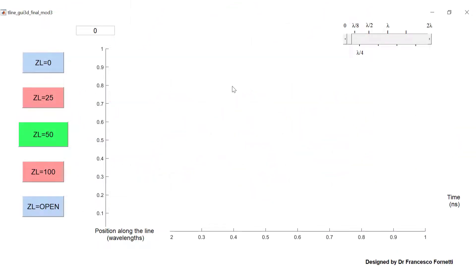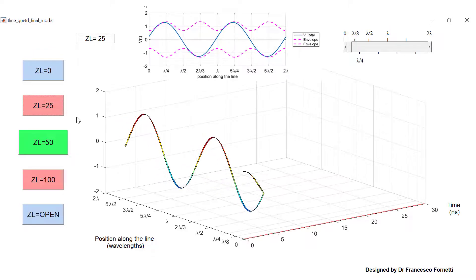This can be clarified with our 3D animation, which enables us to see the voltage that would be observed at any point along the length of the line if we probed it with a high frequency oscilloscope. Let's keep our line unmatched and terminated with a 25 ohm load.